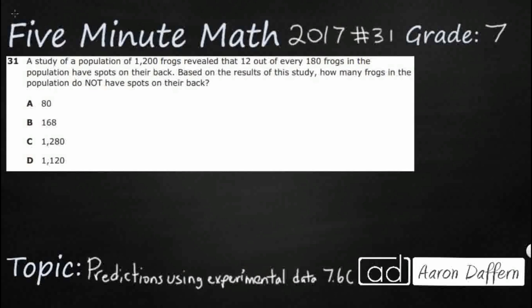We have a study of population with 1,200 total frogs. Then we get this little ratio right here: 12 out of every 180 frogs in the population have spots. Based on these results, this is our experimental data, how many frogs do not have spots?